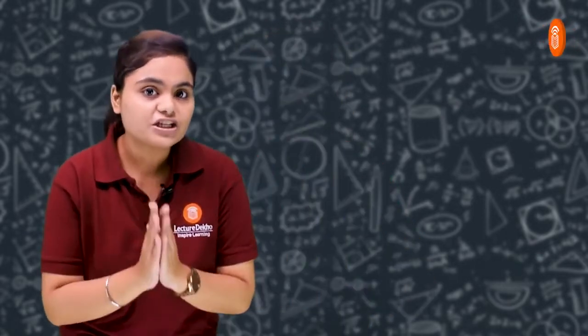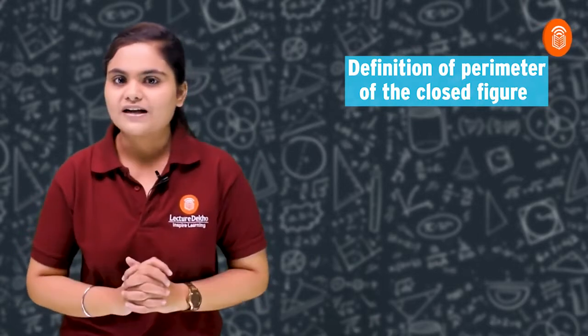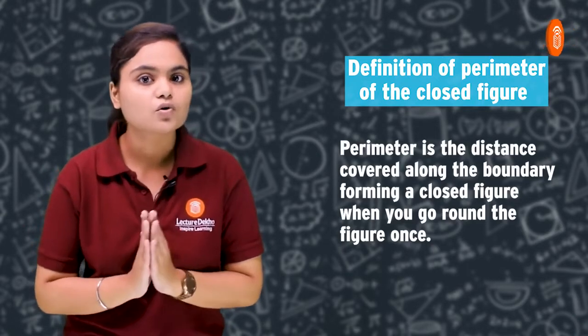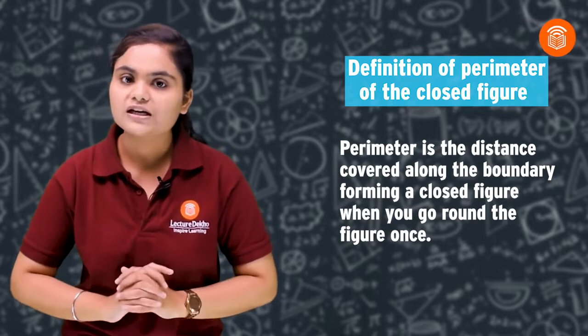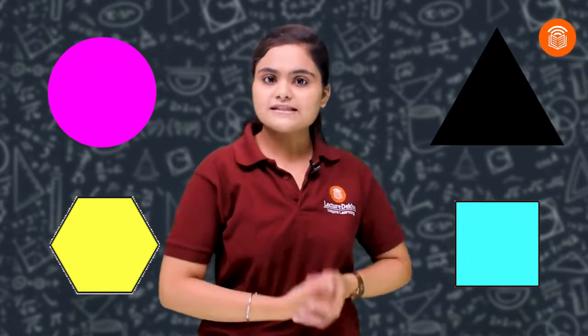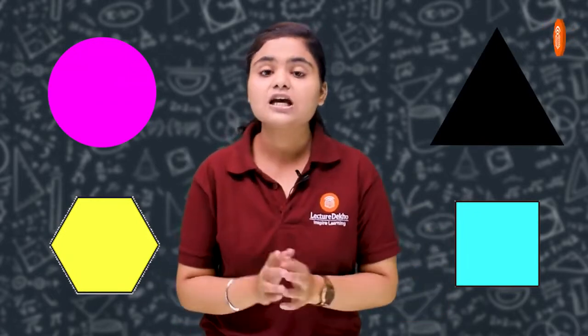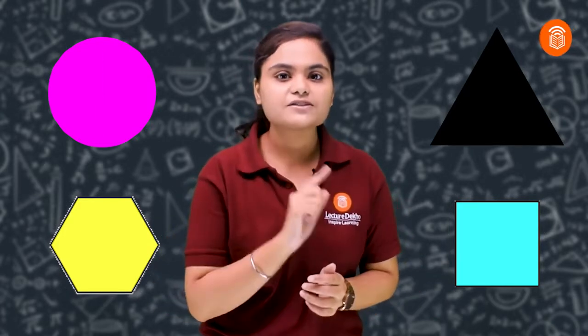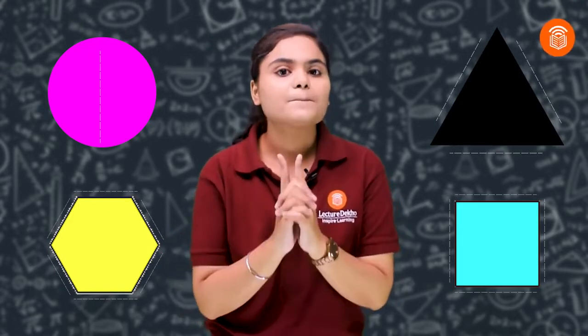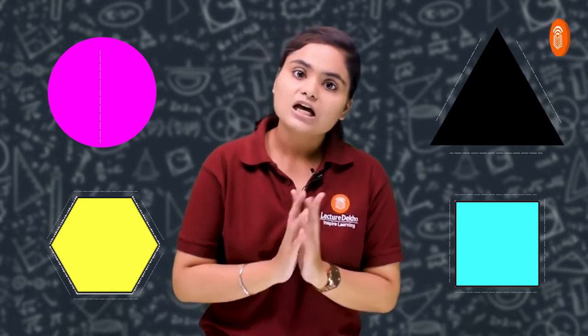Now, the definition of perimeter of a closed figure: Perimeter is the distance covered along the boundary forming a closed figure when you go round the figure once. Students, look at these figures and tell what will be their perimeter. Here you can see some closed figures. The boundary length of any figure — if I measure the boundary length — that is the perimeter of the closed figure.